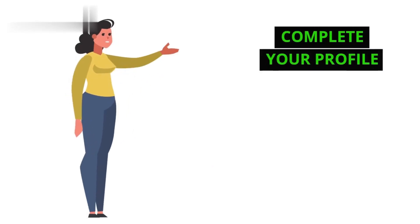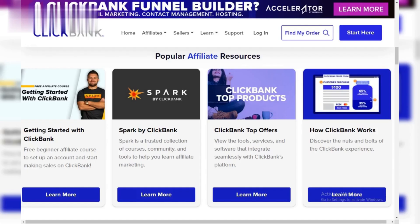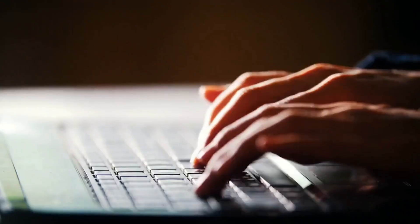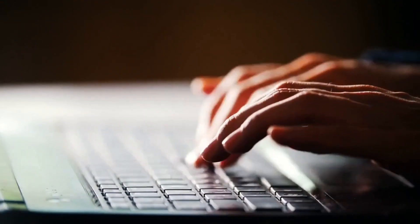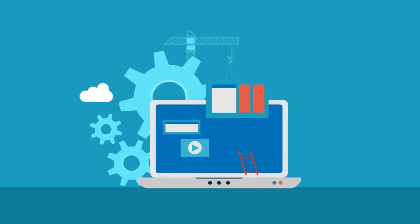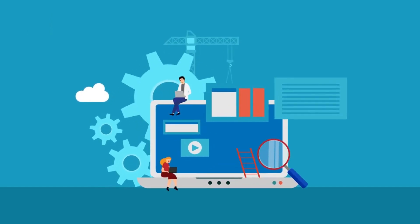ClickBank will ask you some additional details based on your chosen account type. As an affiliate, you might be asked about your website or marketing methods. As a seller, you'll provide information about your product, pricing, and refund policy.